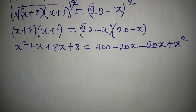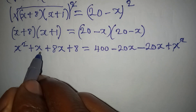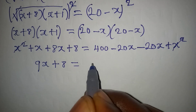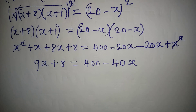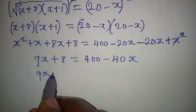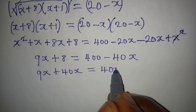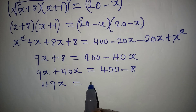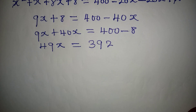From here, x squared appears on both sides and cancels. So x plus 8x gives 9x, plus 8, equals 400 minus 40x. Rearranging: 9x plus 40x equals 400 minus 8, giving us 49x equals 392, because 400 minus 8 is 392.